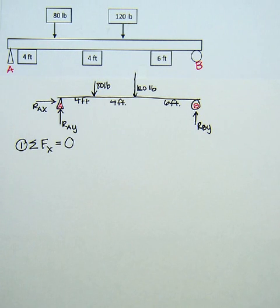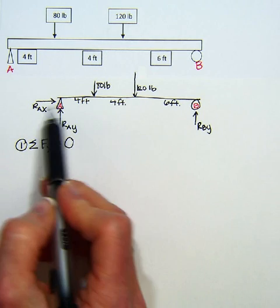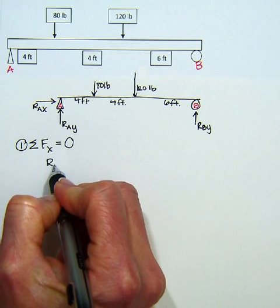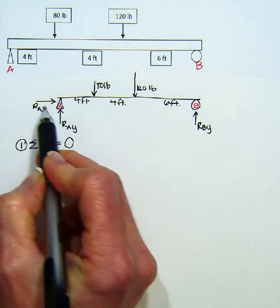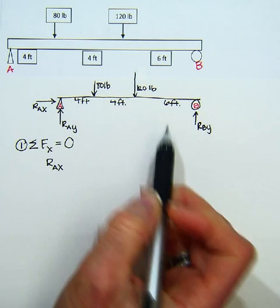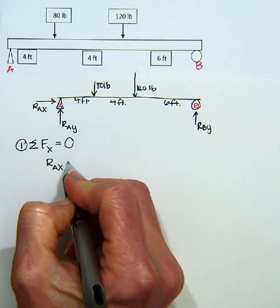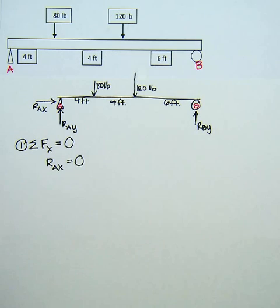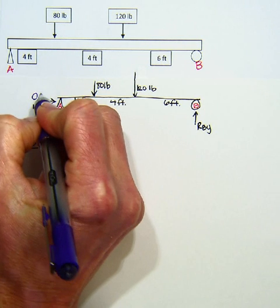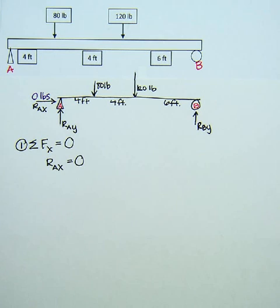So when I look at this picture, I'm trying to find all of the forces that are acting in the x direction. Would it be left or right? So I have reaction force at A in the x direction moving to the left. And then everything else I see is up and down. So that's the only force I have. So that has to equal 0. So now I'm going to label this reaction force has 0 pounds of force because nothing is pulling so there's no reaction.